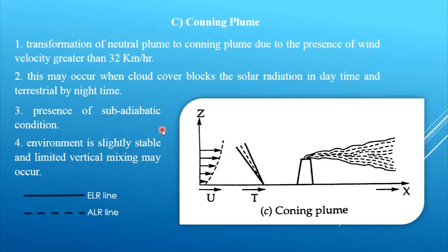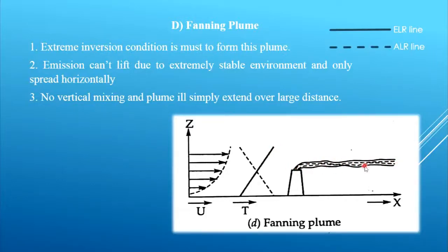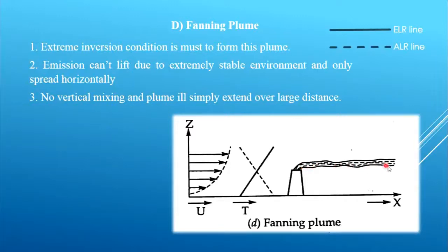The fanning plume occurs under extreme inversion conditions due to negative lapse rate. From the ground surface up to a certain height above the stack gas exit point, the emission will spread in the horizontal direction as it cannot go upward due to extreme stability in the environment. No vertical mixing will occur and the plume will spread in the horizontal direction keeping a fan-like shape — that's why the name is fanning plume.